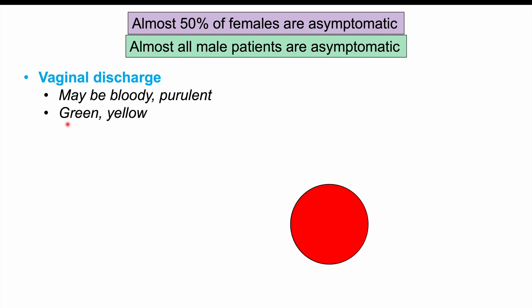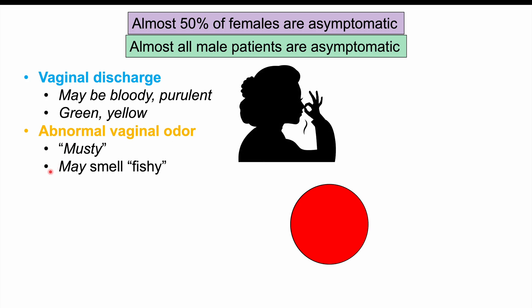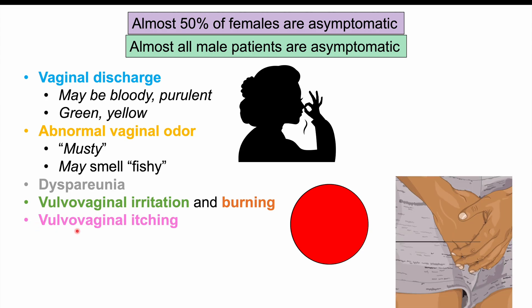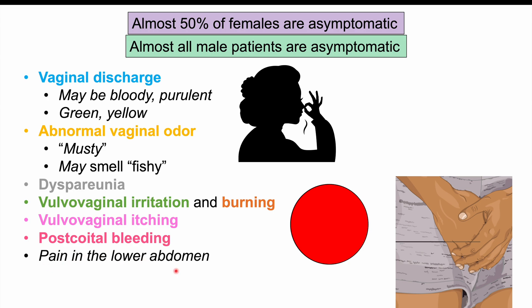The vaginal discharge is often green or yellow in color — green being the characteristic color in trichomoniasis. There can also be abnormal vaginal odor, often described as musty, though a fishy smell is more characteristic of bacterial vaginosis. Other symptoms include dyspareunia (pain during intercourse), vulvovaginal irritation and burning, vulvovaginal itching, post-coital bleeding, lower abdominal pain, and dysuria or cloudy urine.